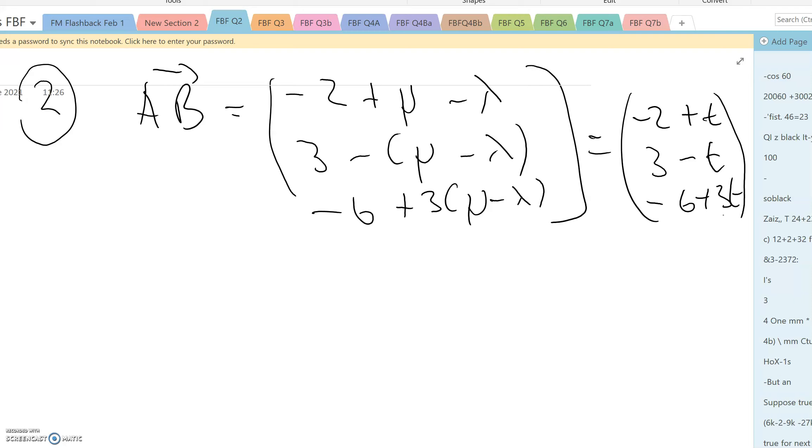But for the shortest distance, AB must be perpendicular to the common direction vector. So minus 2 plus t, 3 minus t, minus 6 plus 3t dotted with 1, minus 1, 3 must equal 0. And that means minus 2 plus t minus 3 plus t minus 18 plus 9t is 0.